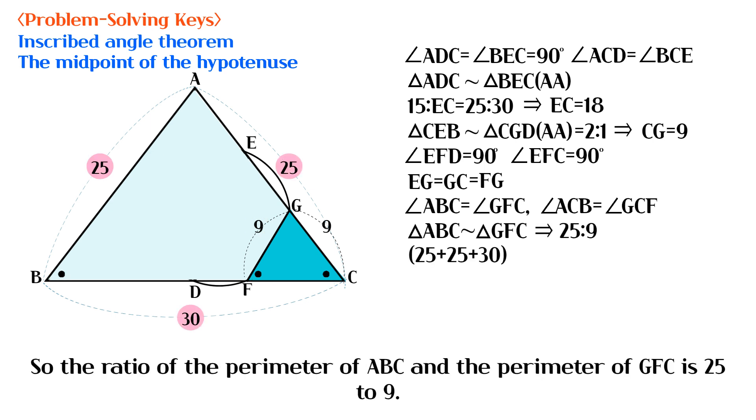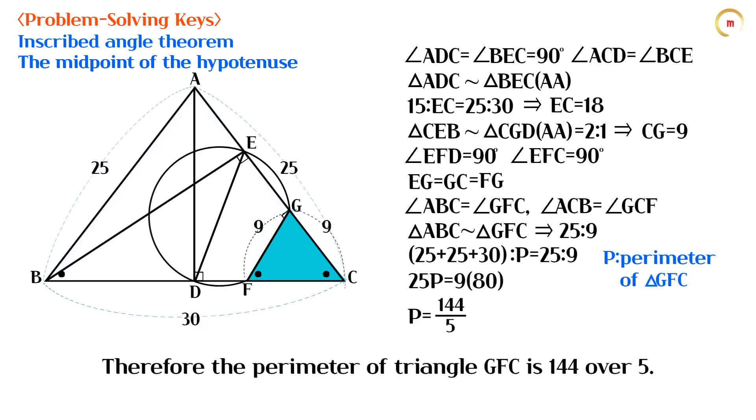So the ratio of the perimeter of ABC and the perimeter of GFC is 25 to 9. Therefore the perimeter of triangle GFC is 144 over 5.